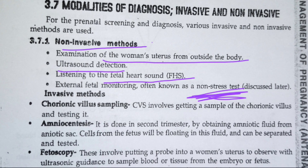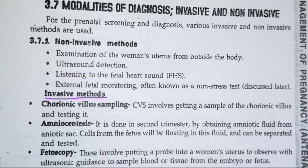In invasive methods, we have chorionic villus sampling. Chorionic villus sampling is done by collecting the chorionic villi, which are present in the placenta. By this examination, you will come to know whether the baby is getting enough blood, enough nutrition, and enough oxygen supply.